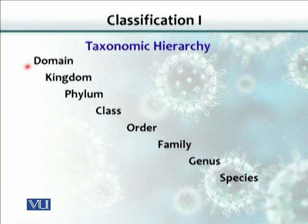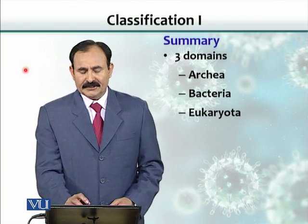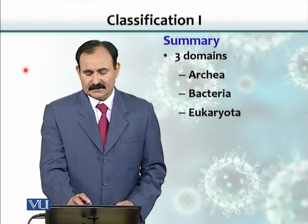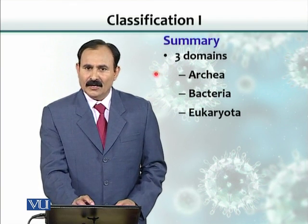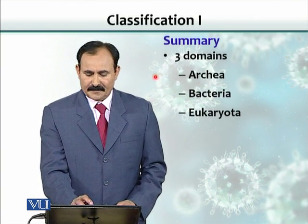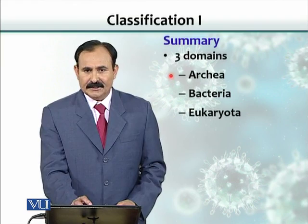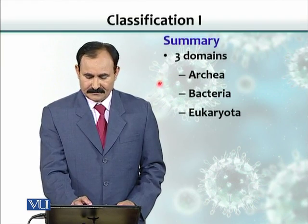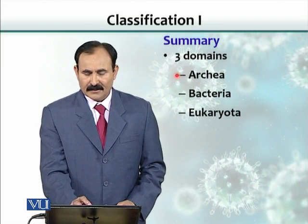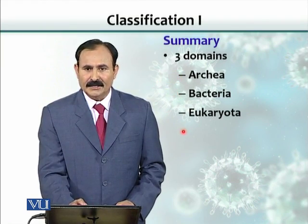In summary, there are three domains, and all organisms are placed into three big categories: Archaea, Bacteria, and Eukaryota.